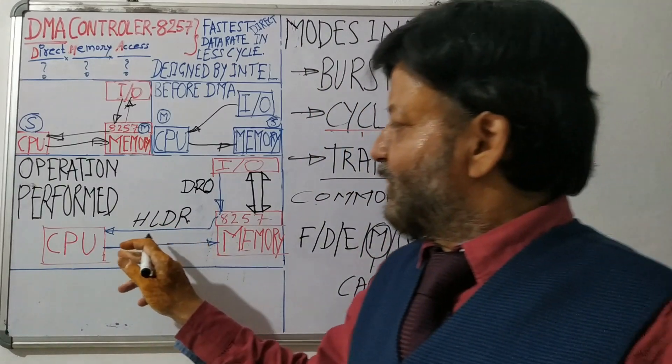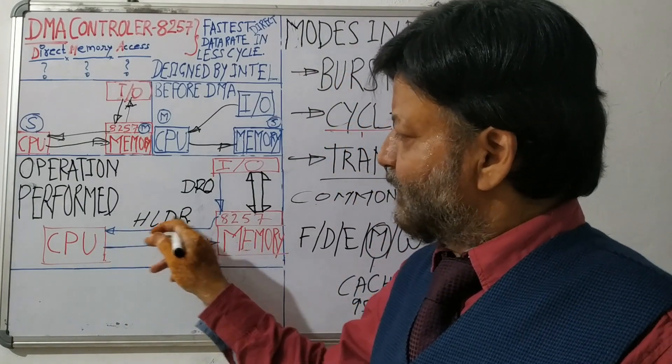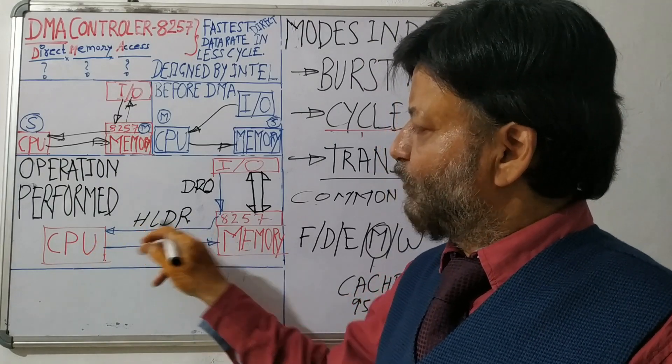So it will send HLD request to CPU because of getting the system bus, control of system bus. So it sends the request to CPU, hold request to CPU.